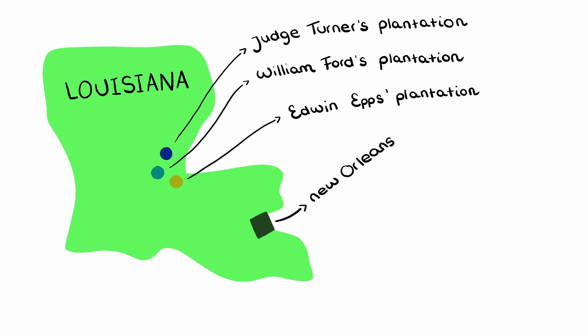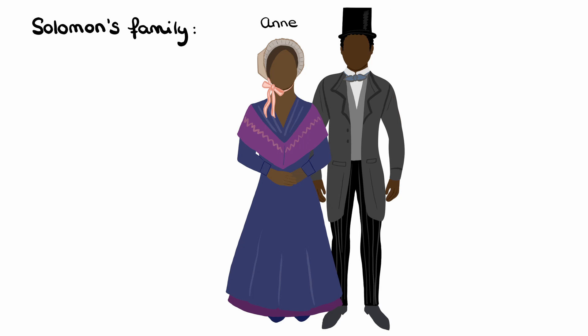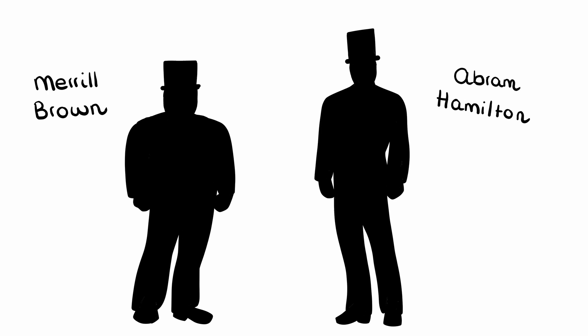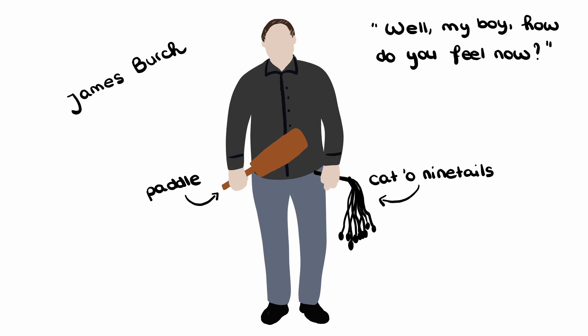On to characters and main events. Let's start with Solomon's family: his wife Anne, and their three children Elizabeth, Margaret and Alonso — they lived a happy life. Solomon's kidnappers were Merrill Brown and Abraham Hamilton, who promised him lucrative work at a circus but tricked and sold him. Birch is the slave dealer who beats Solomon badly after he wakes up in a cell and claims to be a free man — badly enough that Solomon no longer dares to fight for his freedom at this point.